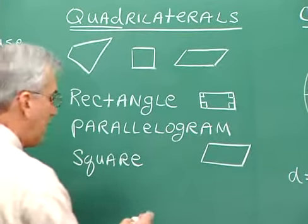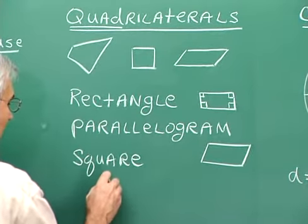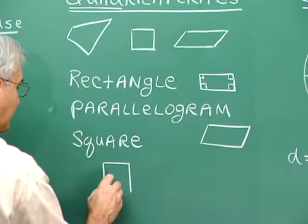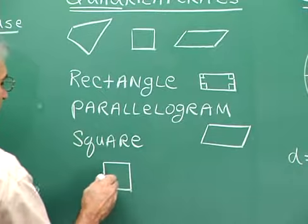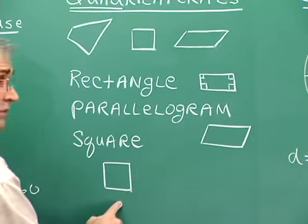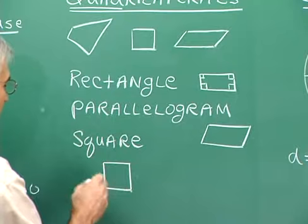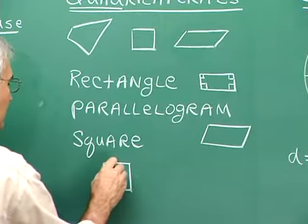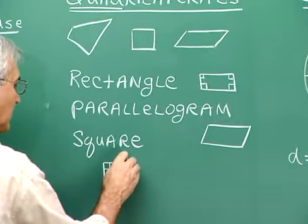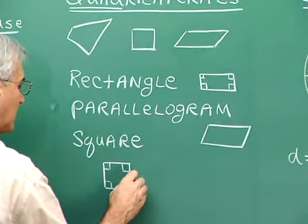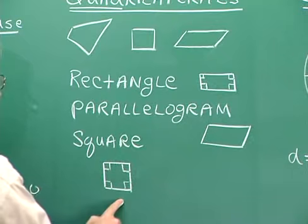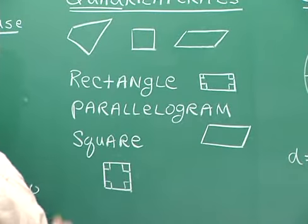A square can be thought of as a very particular kind of rectangle. It has opposite sides of the same length and all right angles — just as a rectangle does. But one additional property: all four sides are the same length.